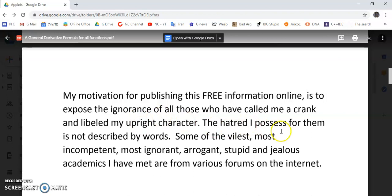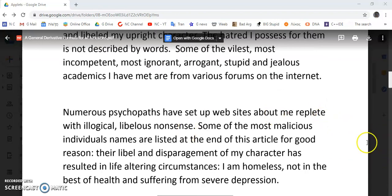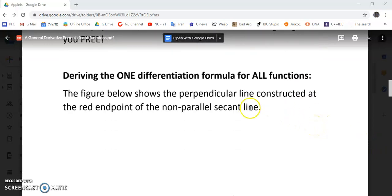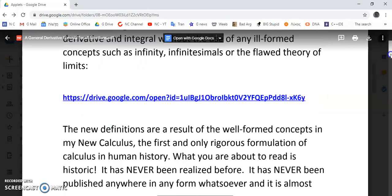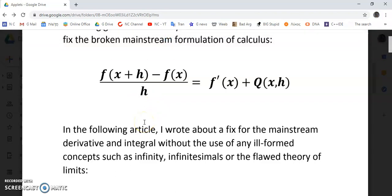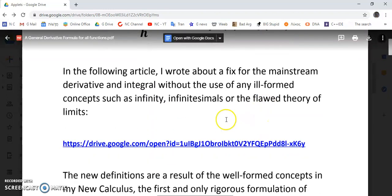My motivation for publishing this free information is to expose the ignorance of those who have called me a crank and to get back at them. This information has been realized in the last two to three weeks - of course, the identity was realized decades ago, this identity here that you see in front of you was realized many decades ago. And of course in the previous video I showed you how you can use this identity to fix your broken mainstream formulation, both your derivative and your integral. The ideas come from the new calculus, but this is not the new calculus. There is no infinity, no infinitesimals, and no limit theory here.